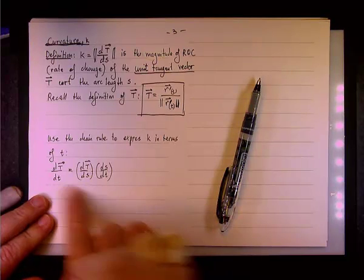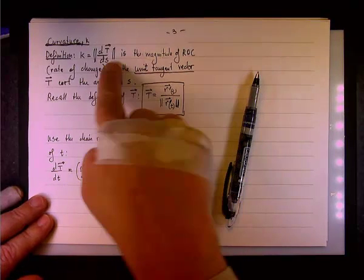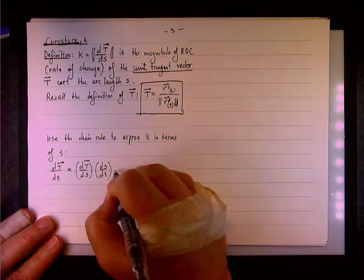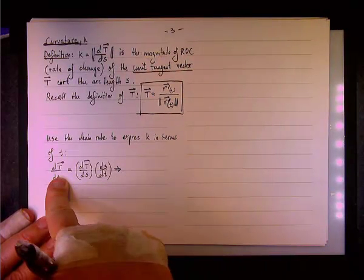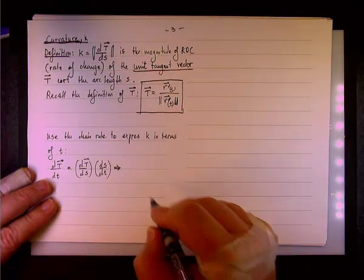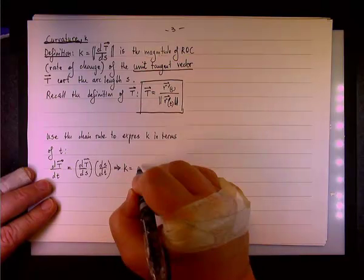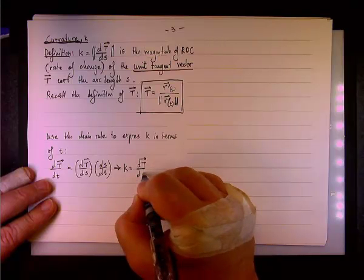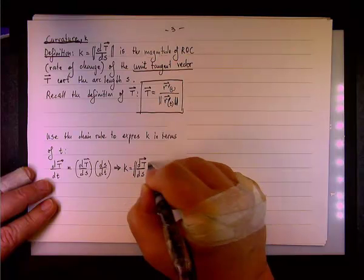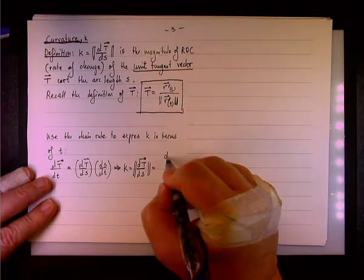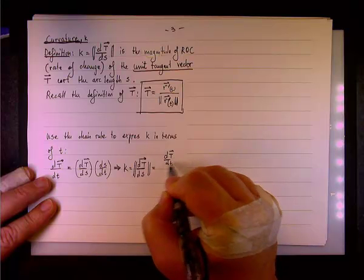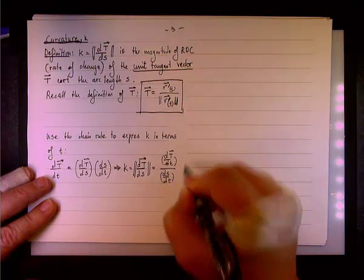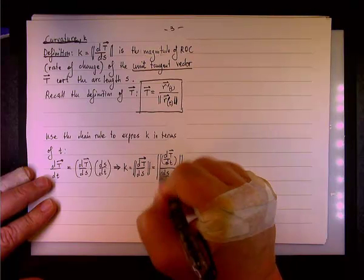So if this is the result of the chain rule, what we are after, this is the definition. So we are looking for the magnitude of the first term. How we accomplish that? Well, we accomplish it by dividing this term, dT/dT by dS/dT. So we're going to say that K, again by definition, it's the rate of change of the unit tangent vector with respect to the arc length, will be dT/dT divided by dS/dT.